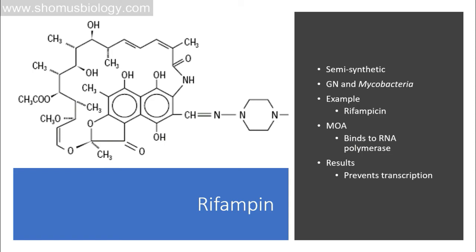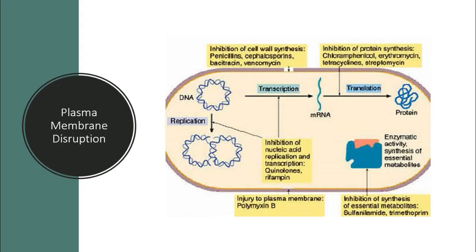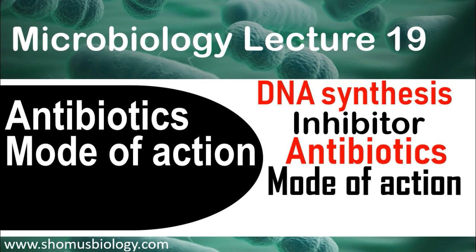Rifampicin is a semi-synthetic antibiotic used for the treatment of mycobacteria and gram-negative bacteria. Its mode of action is binding to RNA polymerase, modifying the polymerase in such a way that it cannot function in polymerizing mRNA — thereby preventing transcription or mRNA synthesis in the bacteria.